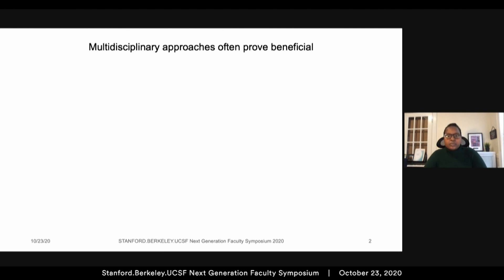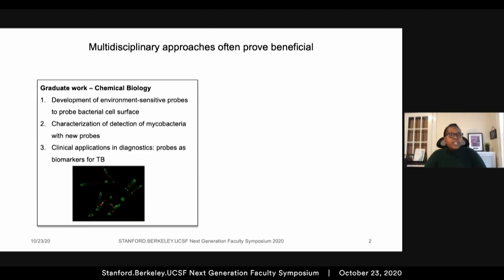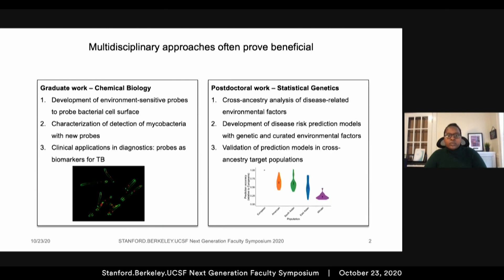As you will see in the next few minutes, all the projects I'm involved in are highly multidisciplinary. I did my PhD in chemical biology with overlaps in microbiology and clinical work in infectious diseases. My postdoctoral work sits at the interface of statistical and epidemiological genetics and global health.